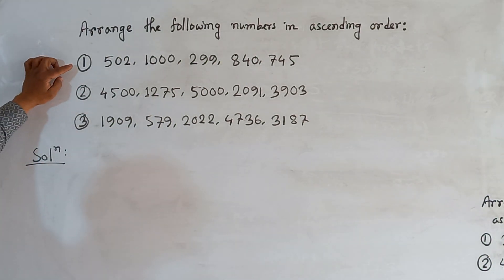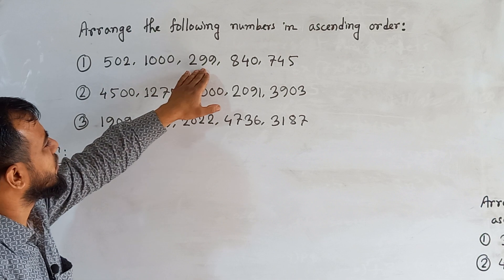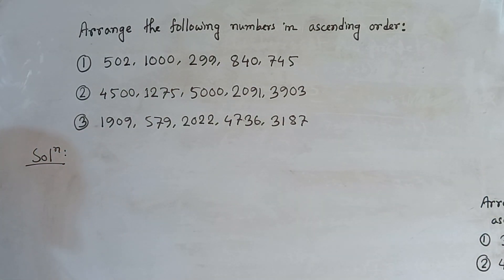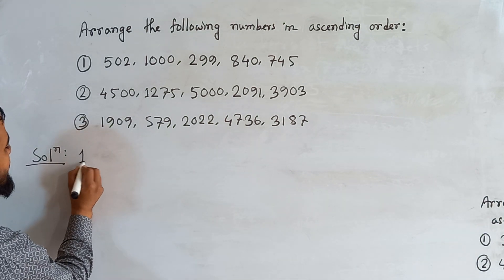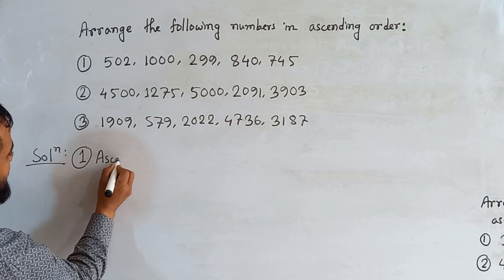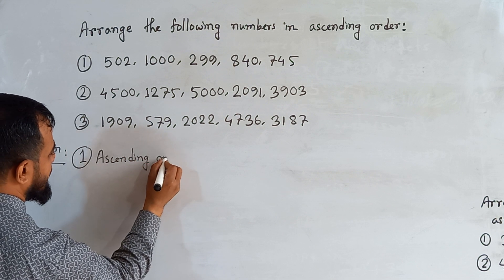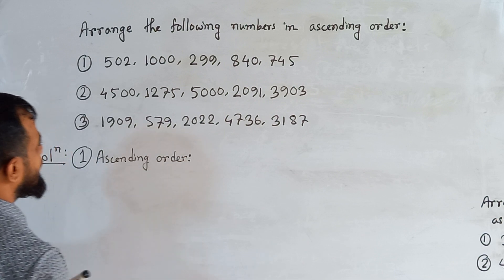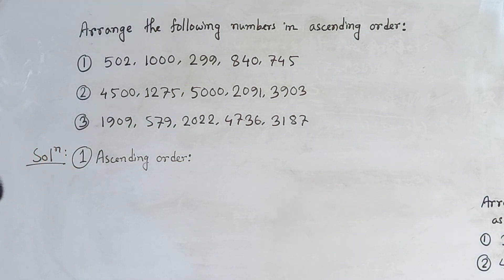In question number one, five numbers are given. We need to arrange them in ascending order — from smaller to greater. First, we identify the place values. For the first number: 2 is in the ones place, 0 is in the tens place, and 5 is in the hundreds place.